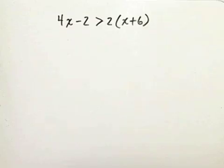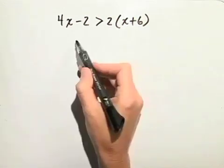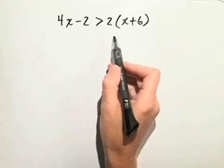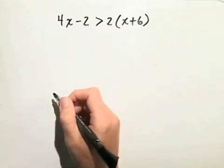For this exercise, we'll solve the inequality and graph the solution set on a number line. So we have 4x minus 2 is greater than 2 times the quantity x plus 6.